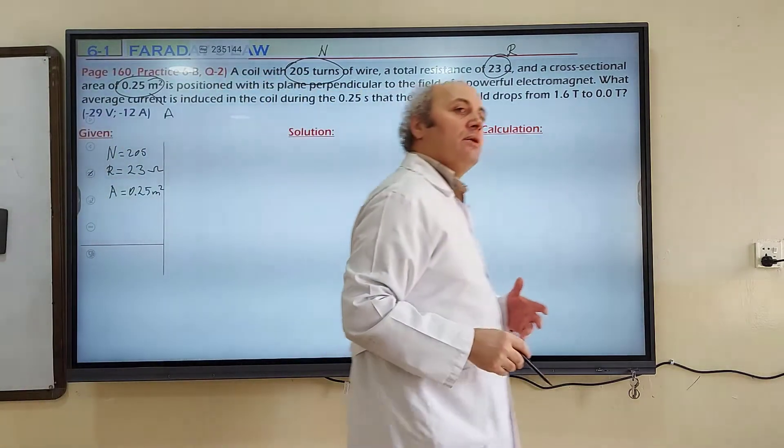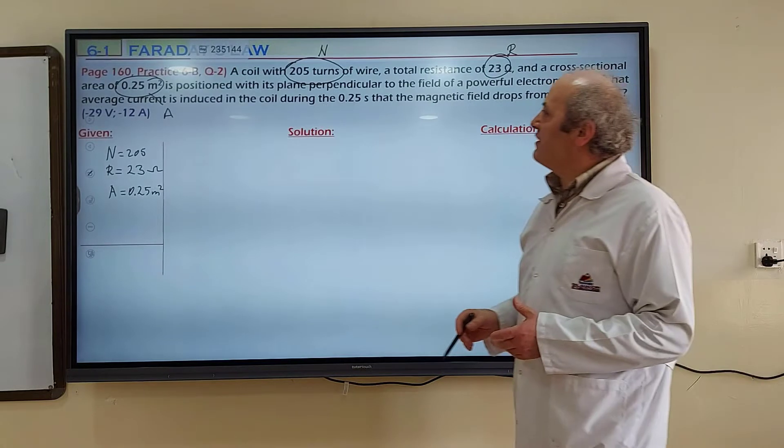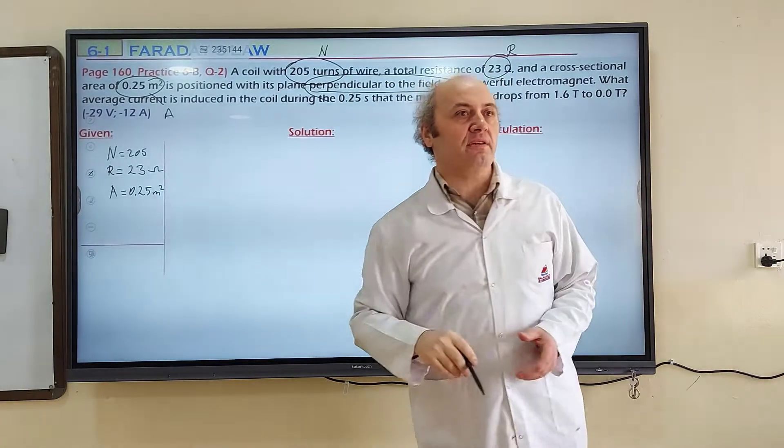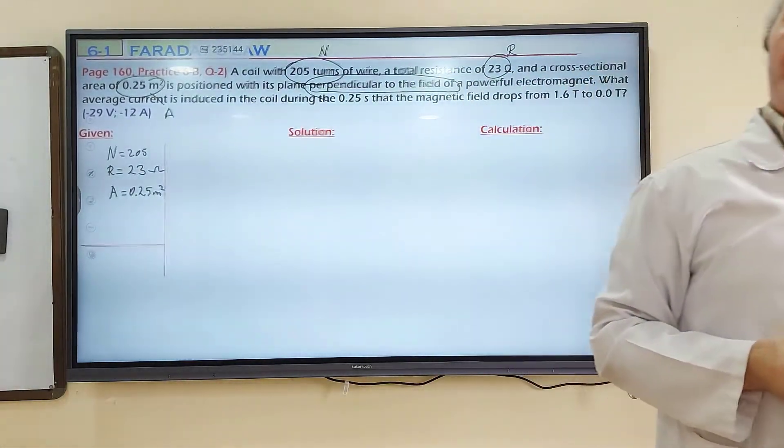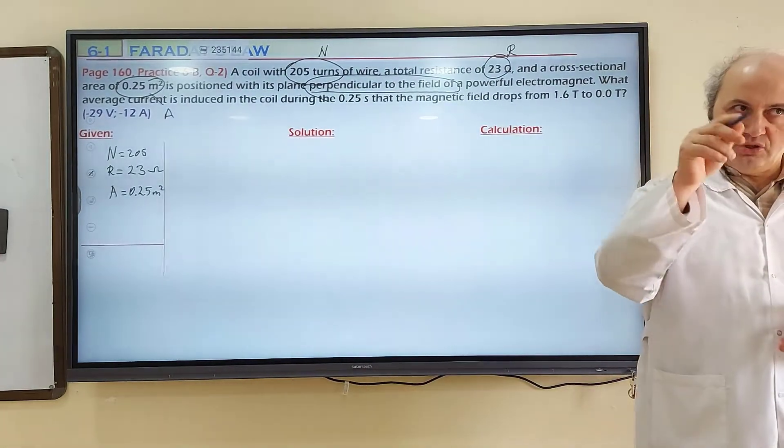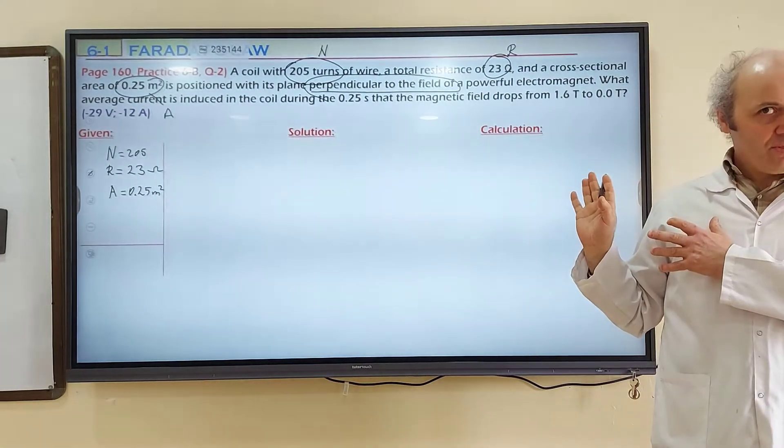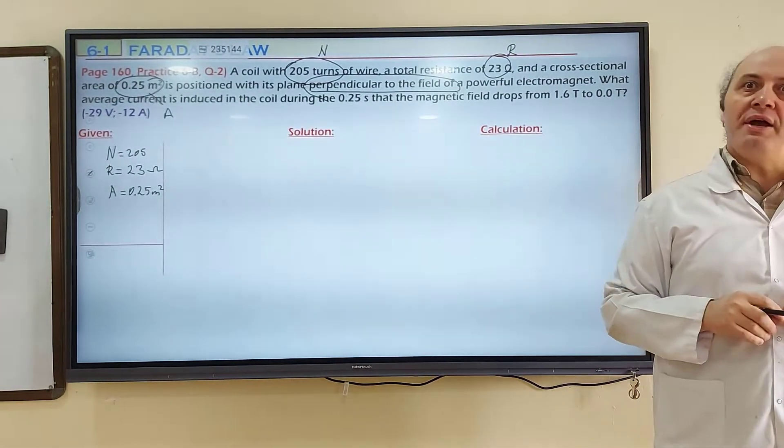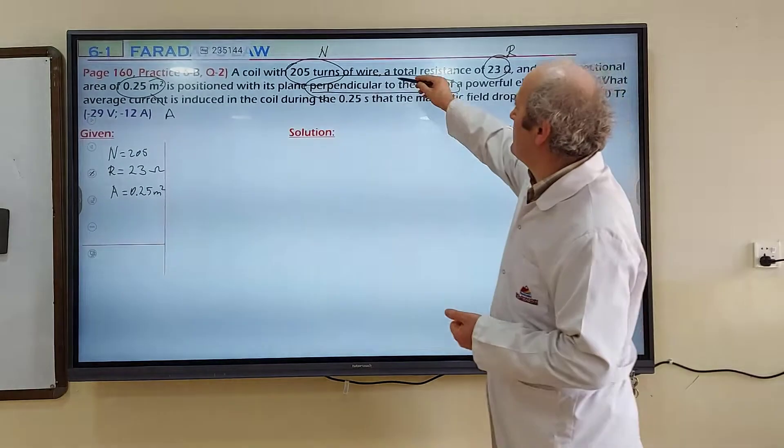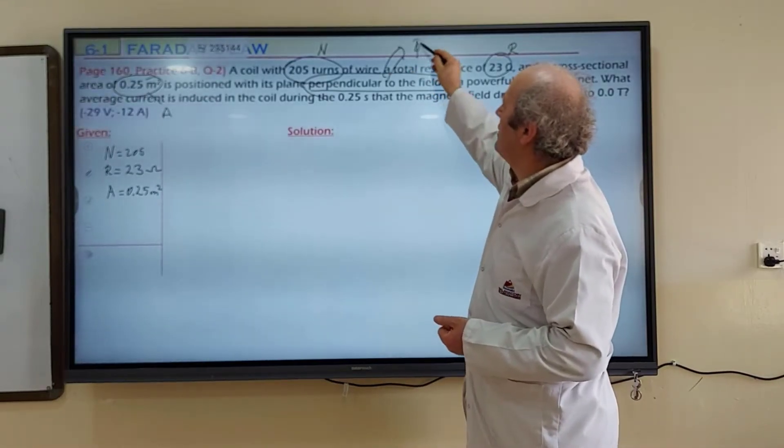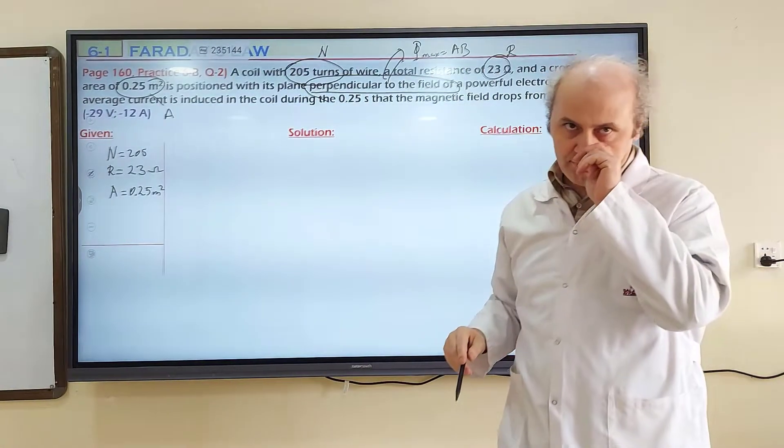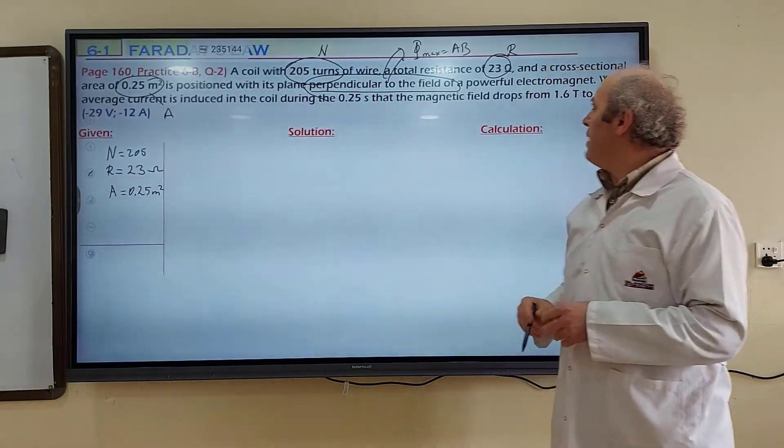This coil is positioned in a magnetic field with its plane perpendicular to the field. If the area is perpendicular to the magnetic field, maximum magnetic flux is calculated. Remember in section 1 of chapter 5, I told you there would be such explanations. Perpendicular to the magnetic field means maximum magnetic flux will be calculated. How can we calculate maximum magnetic flux? Area multiplied by magnetic field.